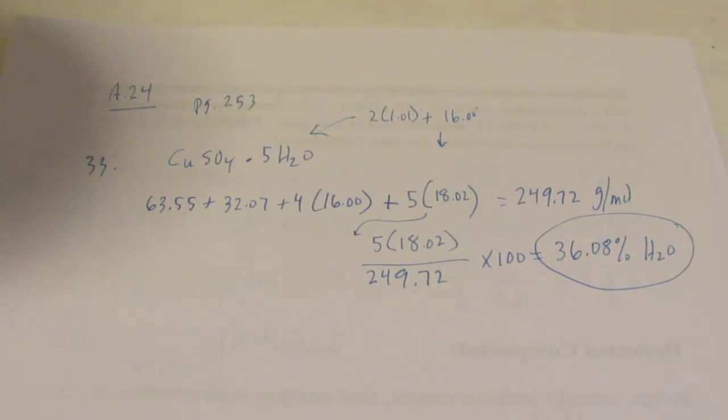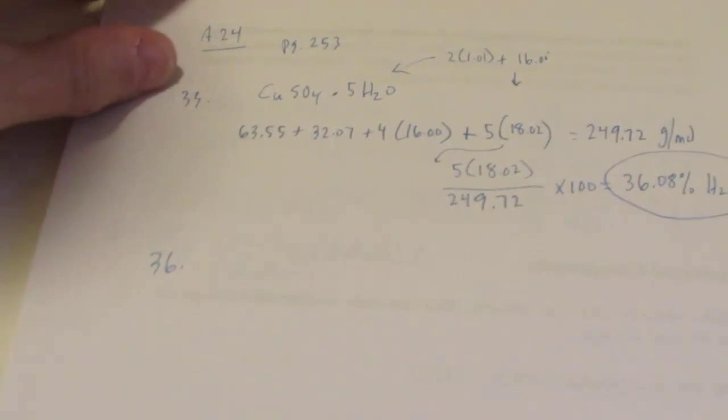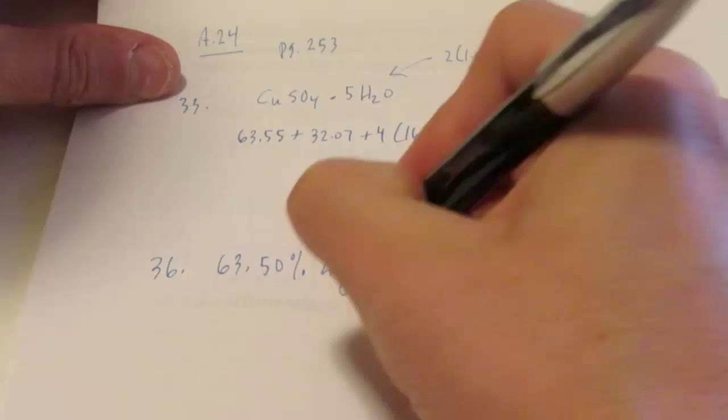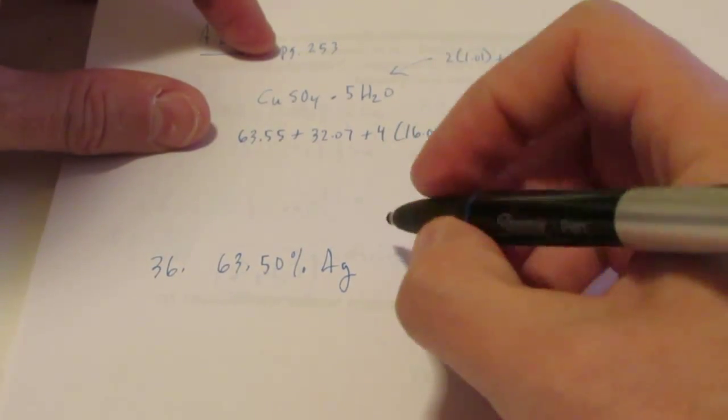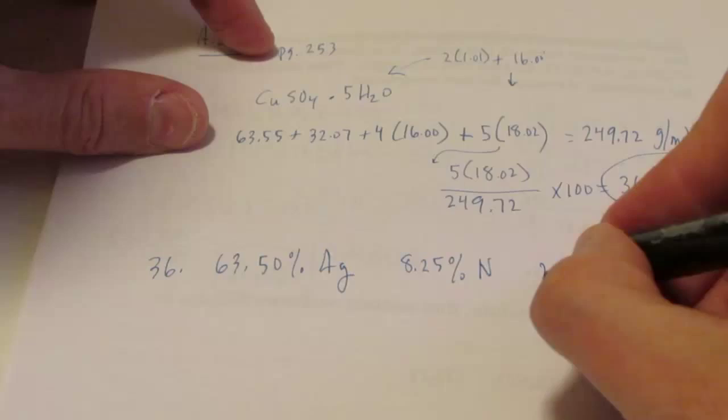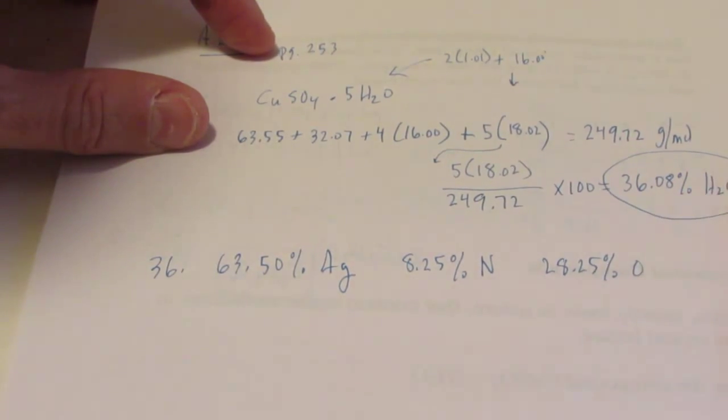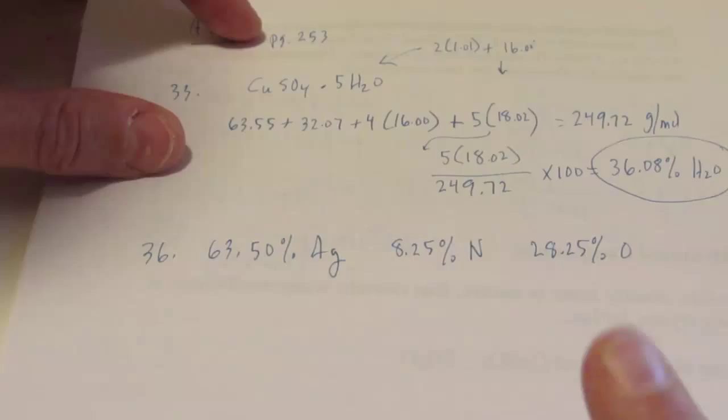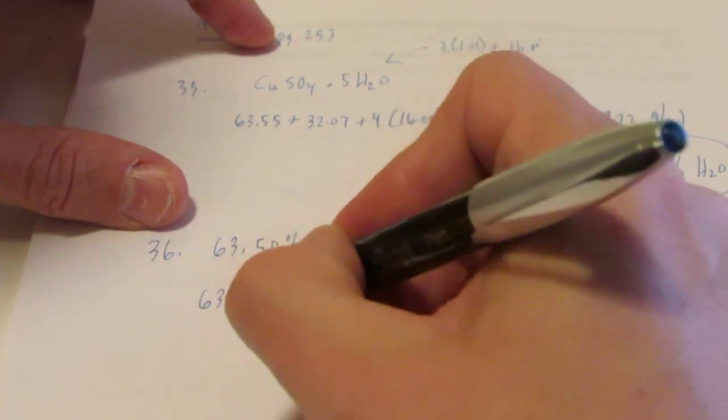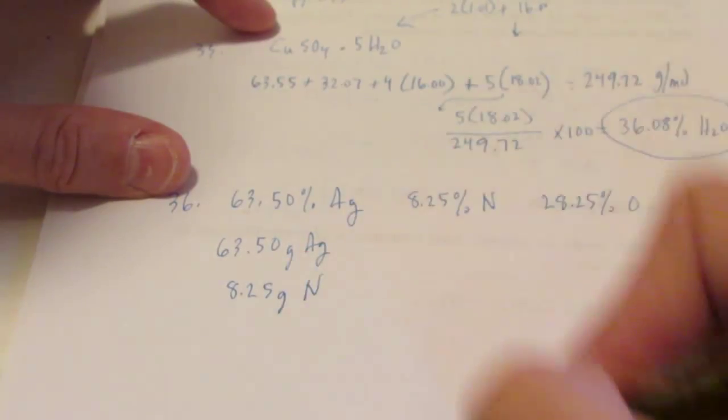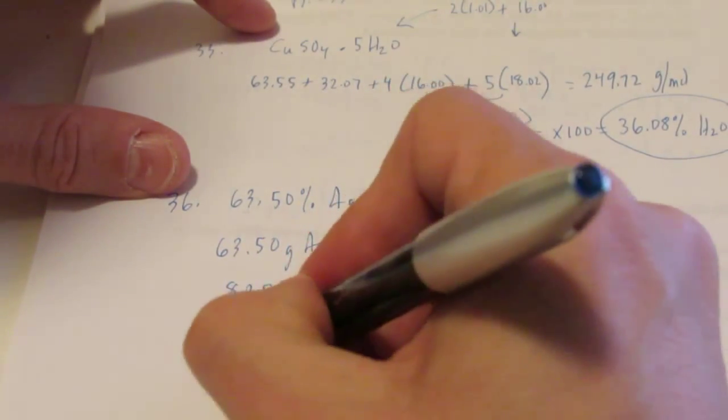The next problem is number 36. So 36 says we have a compound that's 63.50% silver, and what else is it? 8.25% by weight nitrogen. And finally 28.25% oxygen. So whatever's left over, 28.25 from 100 is my oxygen. And we need to find the empirical formula. So step one, assume we have 100 grams of this stuff. So I have 63.50 grams out of 100 of silver, 8.25 grams of nitrogen, and 28.25 grams of oxygen.